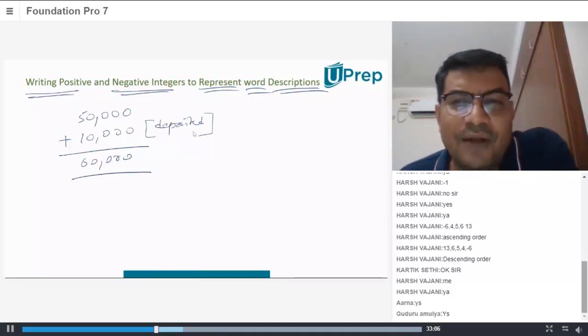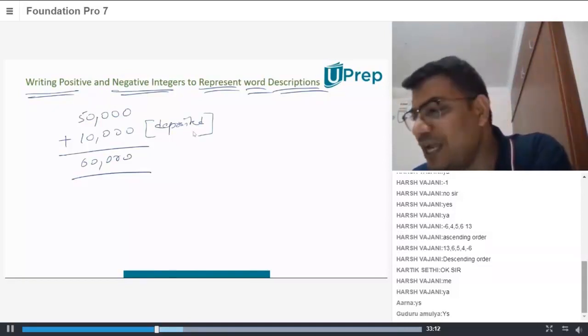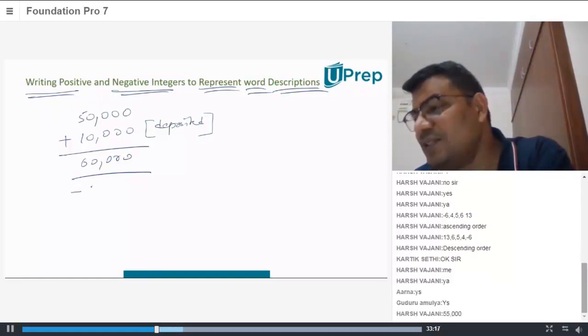Depositing that money that is becoming plus $10,000. Let's assume, after four or five days, your mom goes to the ATM and withdraws $5,000. So, now she has $60,000.